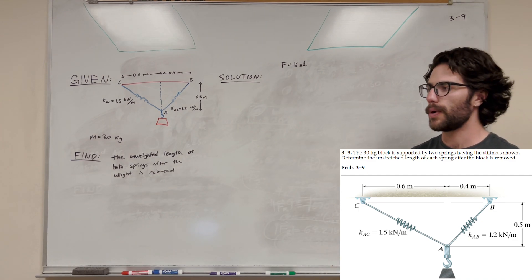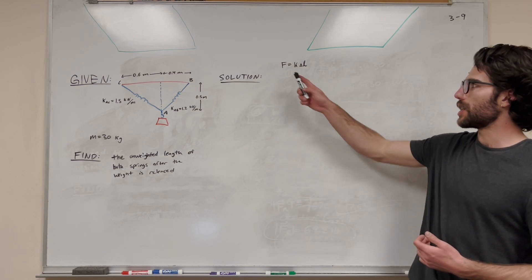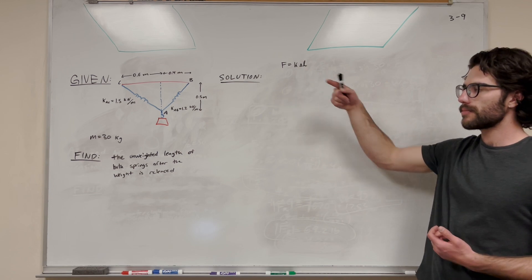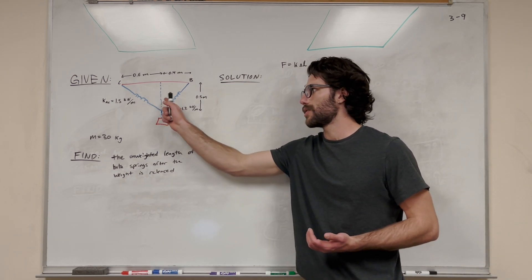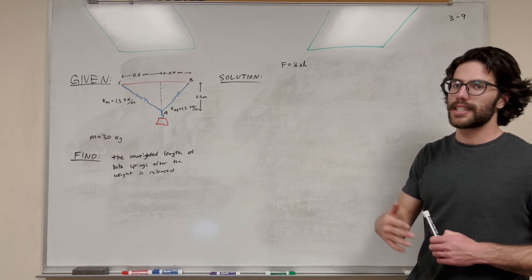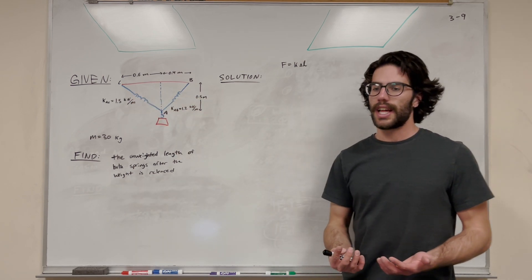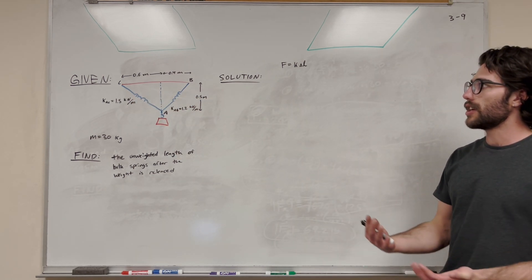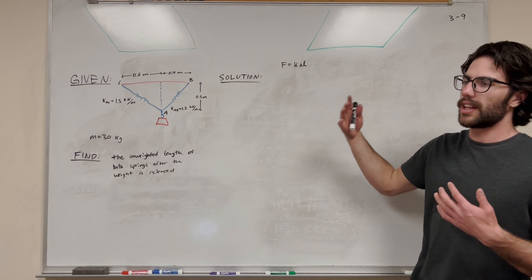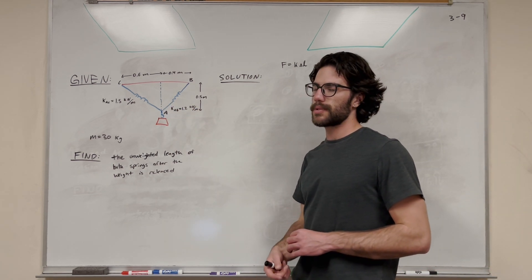So it might be kind of a confusing problem — where do you want to approach this from? Here's how I'm rationalizing it. We have this equation: force is equal to k times delta L. So k is the spring coefficient, given to us for these two springs, and delta L is the change in length — final length minus initial length. Basically what we're given is final length, and what we want to find is initial length. We have two unknowns — initial length and force — so our first step should be to find the force in each spring.